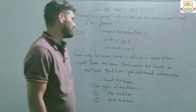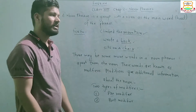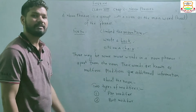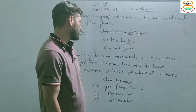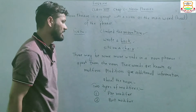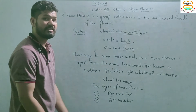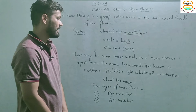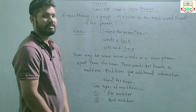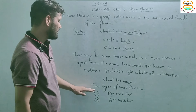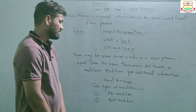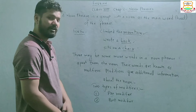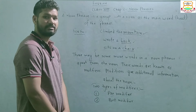There may be some more words in a noun phrase apart from the noun. These words are known as modifiers. Modifiers give additional information about the noun. We are talking about two types of modifiers: pre-modifiers and post-modifiers.